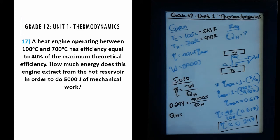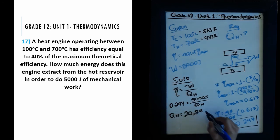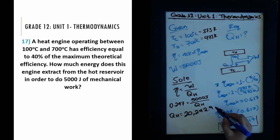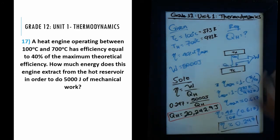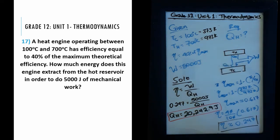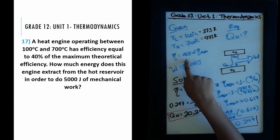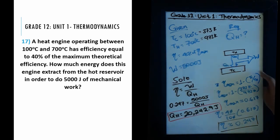5000 divided by 0.247 gives approximately 20,242.9 joules. Using a calculator, this is approximately 20,000-something joules as the input energy from the hot reservoir. The important thing here is not the exact numbers, but to understand the concept of efficiency of a heat engine. The law of entropy and the second law of thermodynamics prevents any engine from being 100% efficient — it even prevents it from reaching the maximum theoretical efficiency.